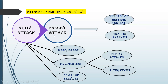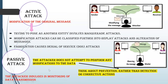When looking at attacks technically, there are two types: active and passive. Passive attack is further divided into release of message content and traffic analysis. Active attack is further divided into masquerade, modification, and denial of services, where modification has two further branches — replay attack and alteration. Active attack is when an attacker sitting between a sender and receiver modifies the original message before it reaches the receiver.